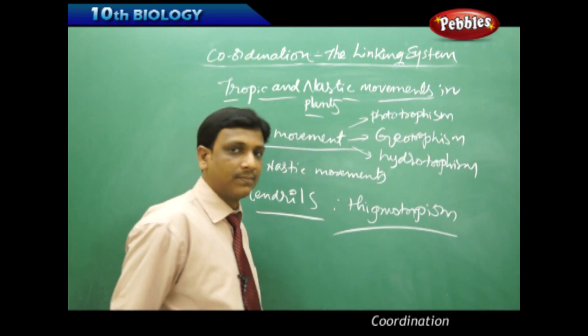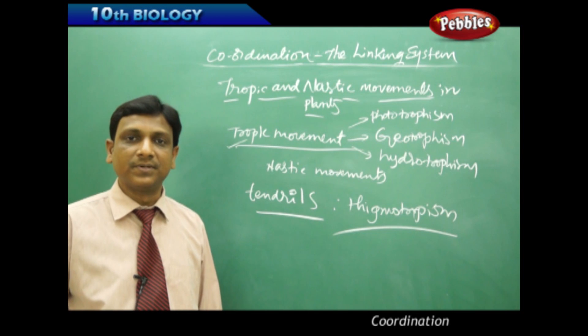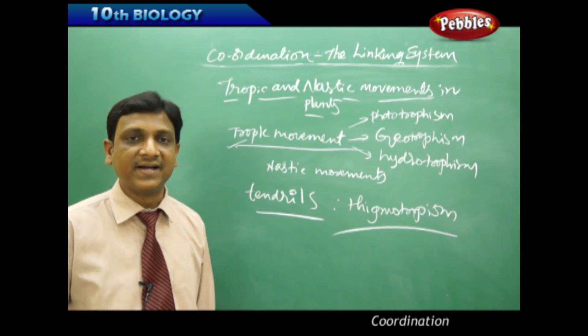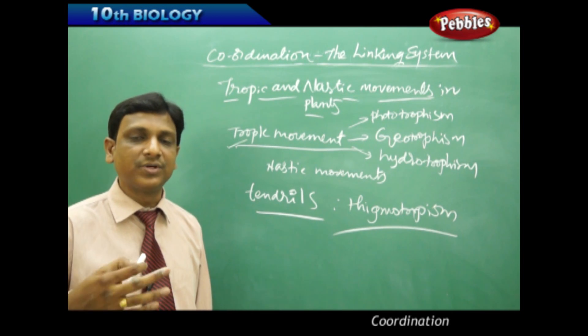Thigmotropism is also observed in plants like climbers and creepers, which are very weak-stemmed plants that produce tendrils to get support.